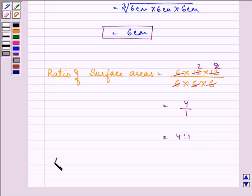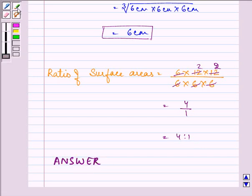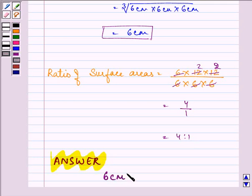So the final answer: 6 cm is the side of the new cube and the ratio of their surface area is 4 is to 1.